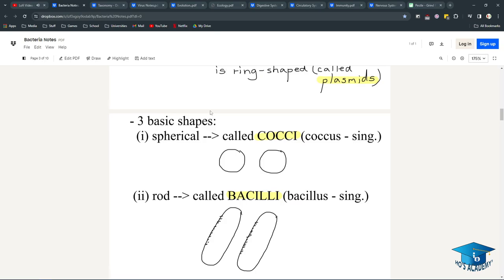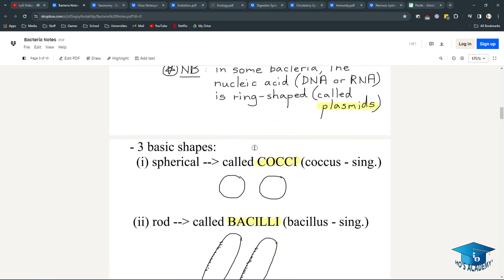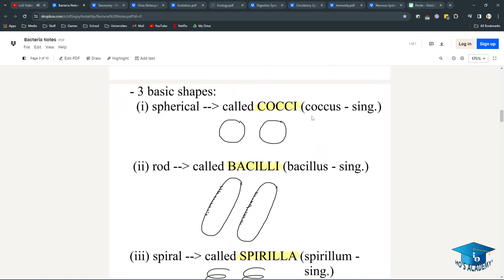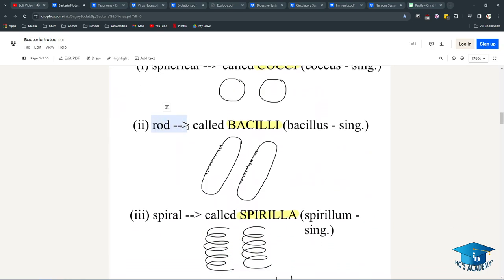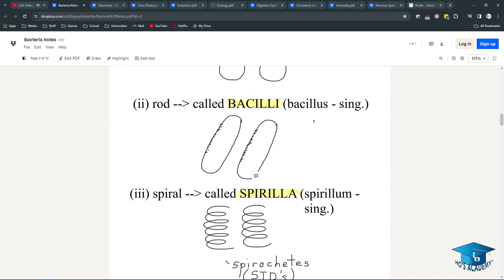There are three basic shapes, and from these shapes you can infer the bacteria: cocci or coccus singular, rod-shaped bacilli, and spiral-shaped spirilla.